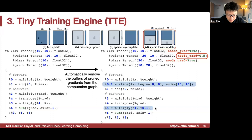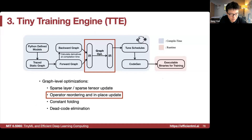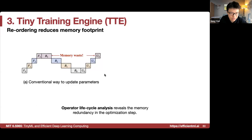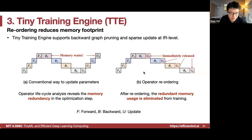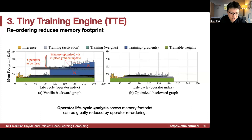The sparse update results in 6-8x peak memory reduction compared to full update in measured peak memory. We also perform operator reordering — immediately releasing buffers as soon as weights are updated rather than keeping long distances between calculation and update — saving another 2-3x peak memory. Operator lifecycle analysis confirms a large reduction in memory footprint.